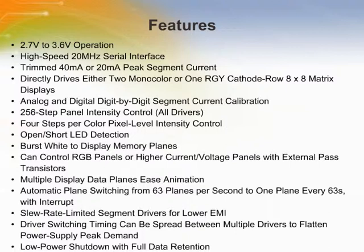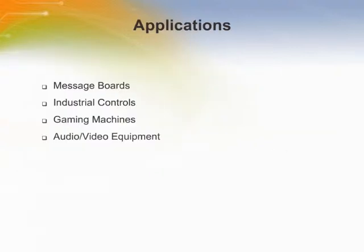The MAX6960 drives mono-color or red-green-yellow displays with 2-step or 4-step intensity control. It is a multiplex constant current LED driver intended for high-efficiency indoor signs and message boards. It can be used for applications requiring higher peak segment currents and in red-green-blue panels needing a higher driver voltage for the blue LEDs. The MAX6960 can also be used with external drive transistors to control anode row displays with all driver features including pixel-level intensity control.